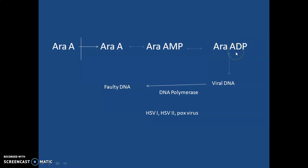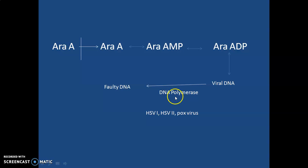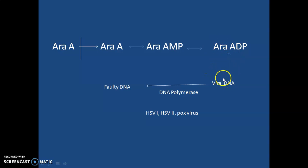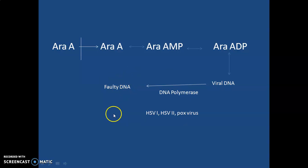It is converted from Ara-AMP to Ara-ADP to Ara-ATP. This active form of vidarabine acts both as a substrate of DNA polymerase, increasing the number of DNA copies, and also as an inhibitor of viral DNA polymerase. If arabinose is incorporated instead of deoxyribose, the DNA polymerase creates faulty or weak DNA that cannot survive inside the host cell. That is the basic mechanism of action of this drug.